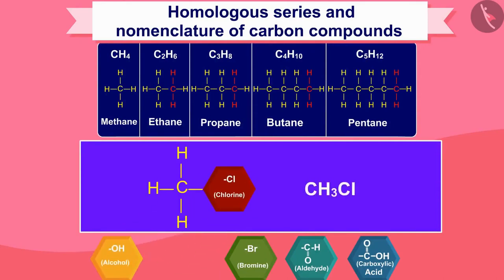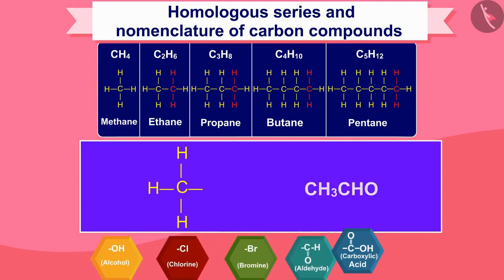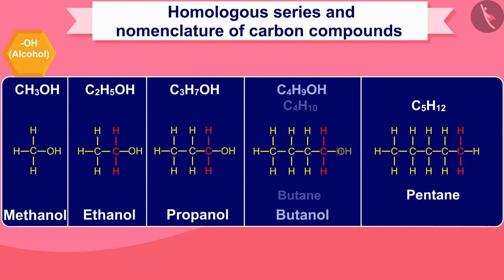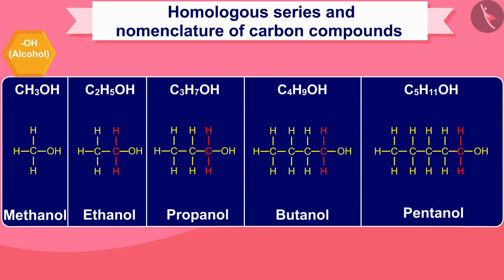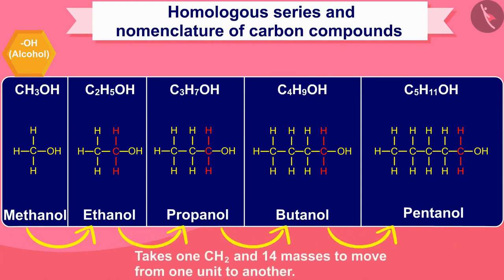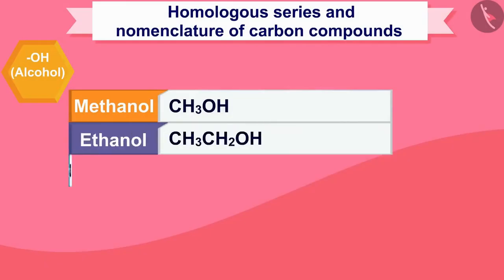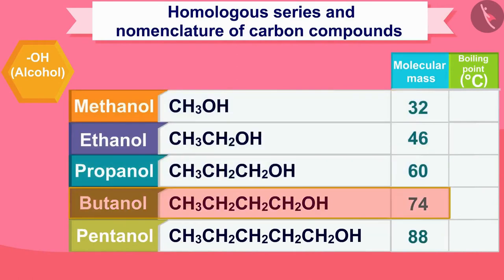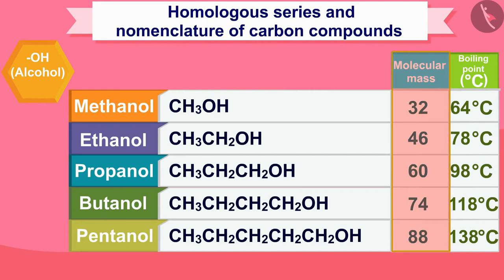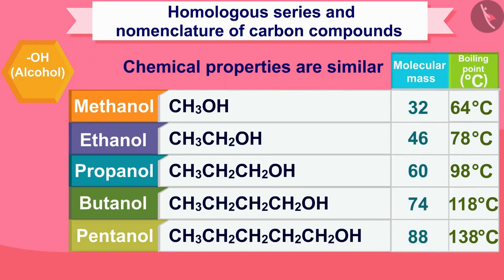You can form homologous categories by placing different functional groups in hydrocarbon chains. A series of compounds in which the same functional group substitutes for hydrogen in a carbon chain is called a homologous series. It takes 1 CH2 unit and 14 mass units to move from one member to another. When molecular mass increases in a homologous series, there is a gradation in physical properties, because melting point and boiling point increase as molecular mass increases.